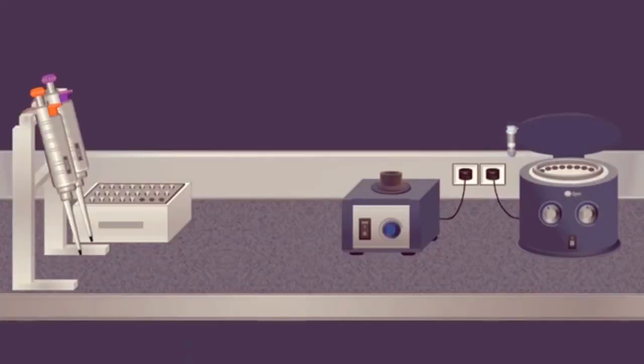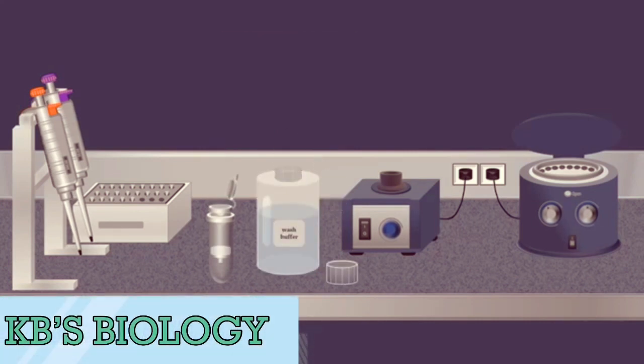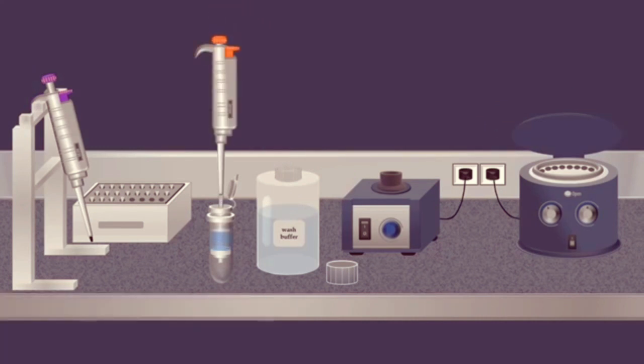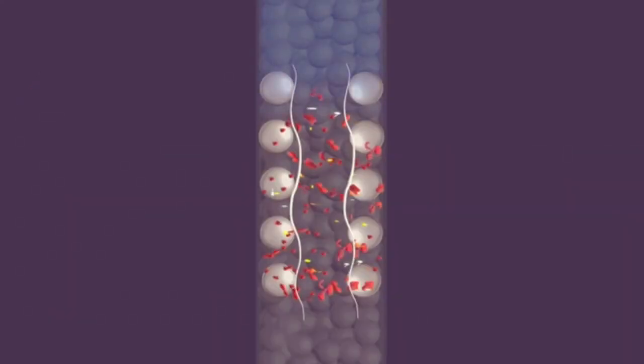After centrifugation the spin column is placed into a clean collection tube, and the filtrate is discarded. Then a wash buffer is added. The column is put in a centrifuge again, forcing the wash buffer through the membrane. This removes any remaining impurities from the membrane, leaving only the RNA bound to the silica gel.